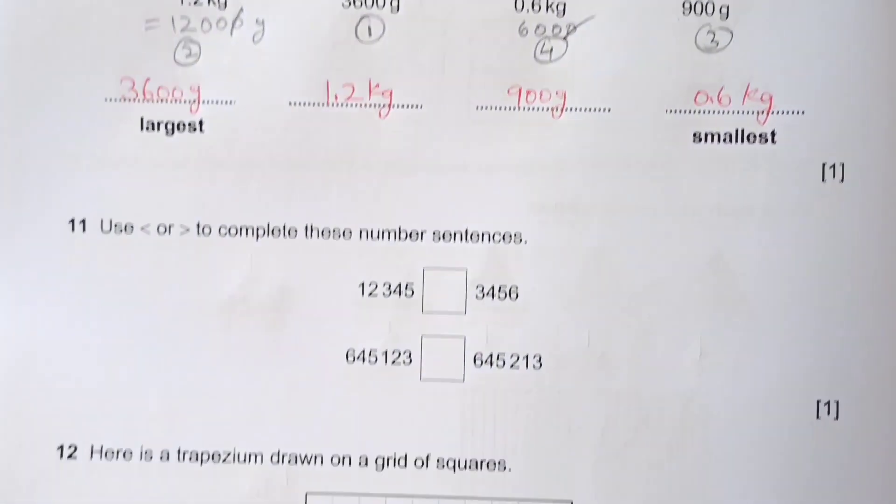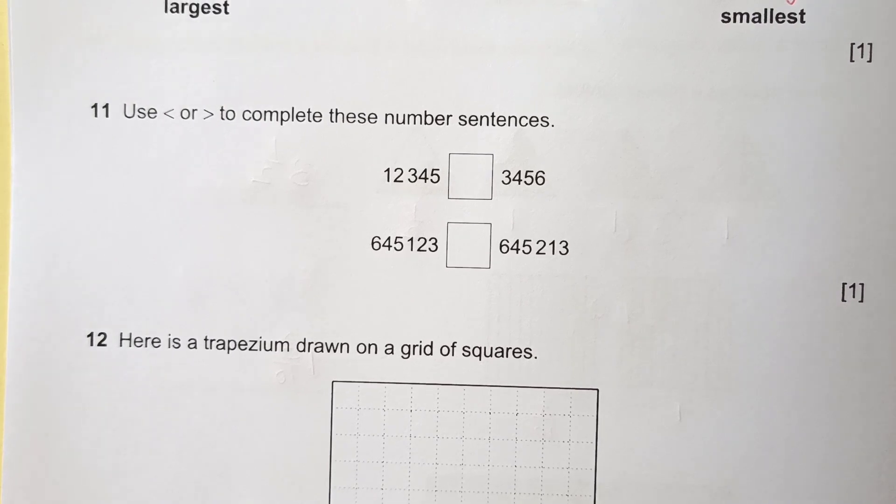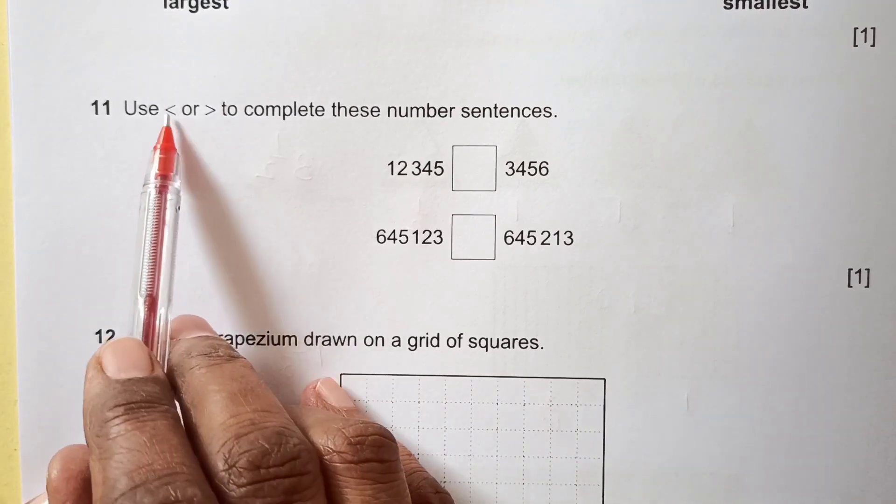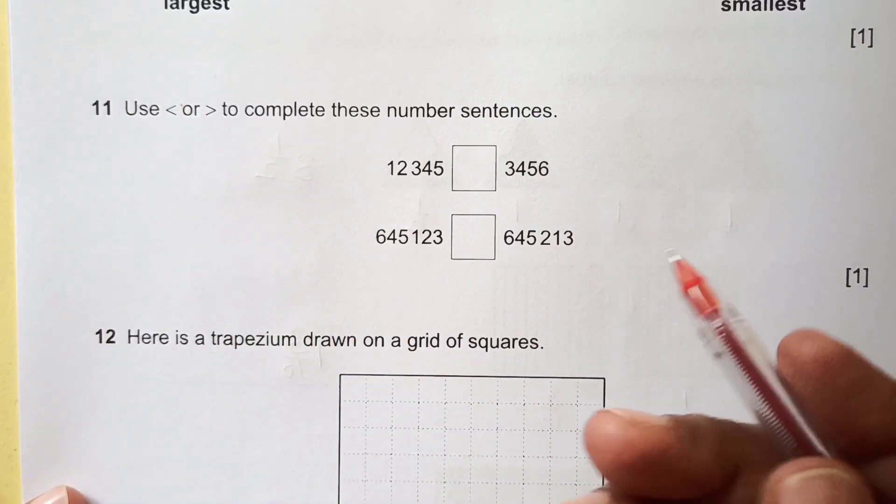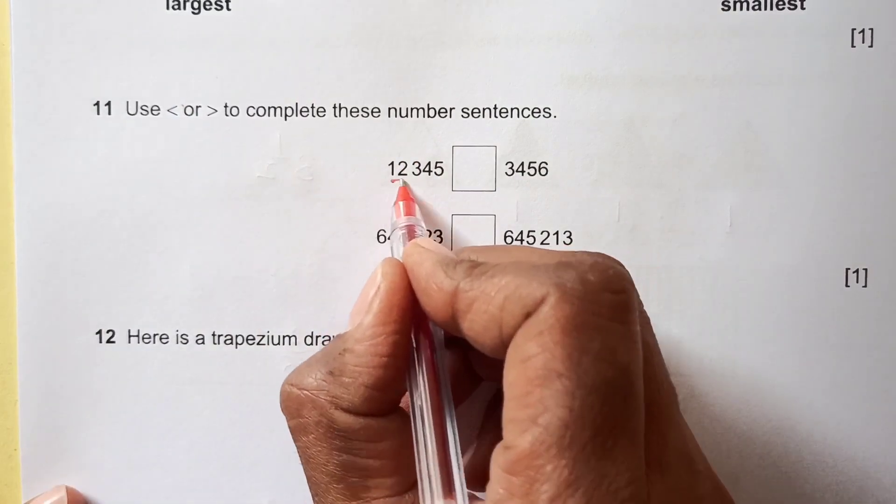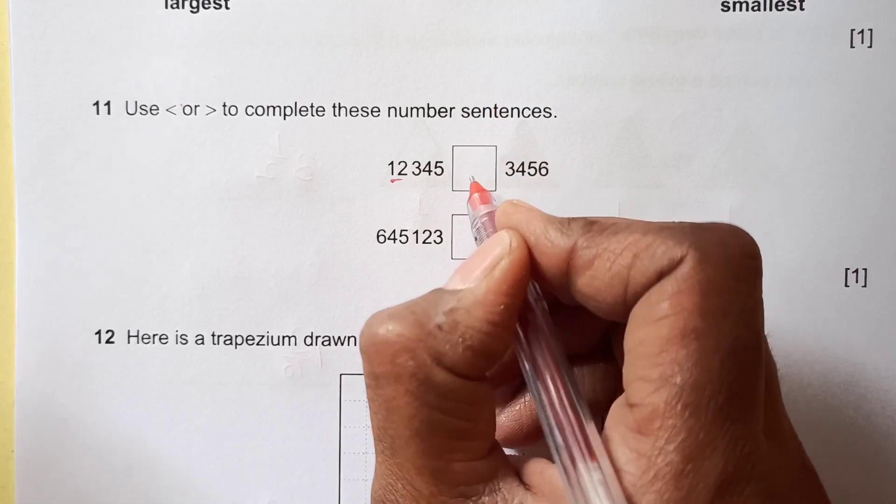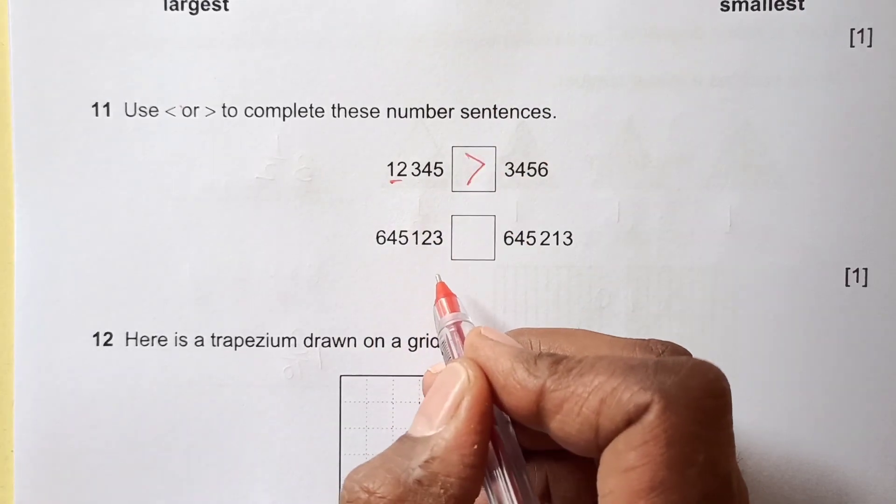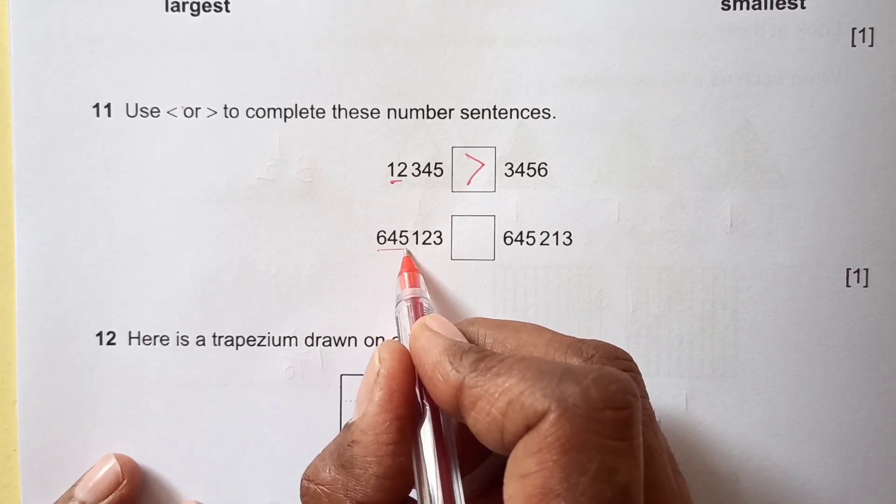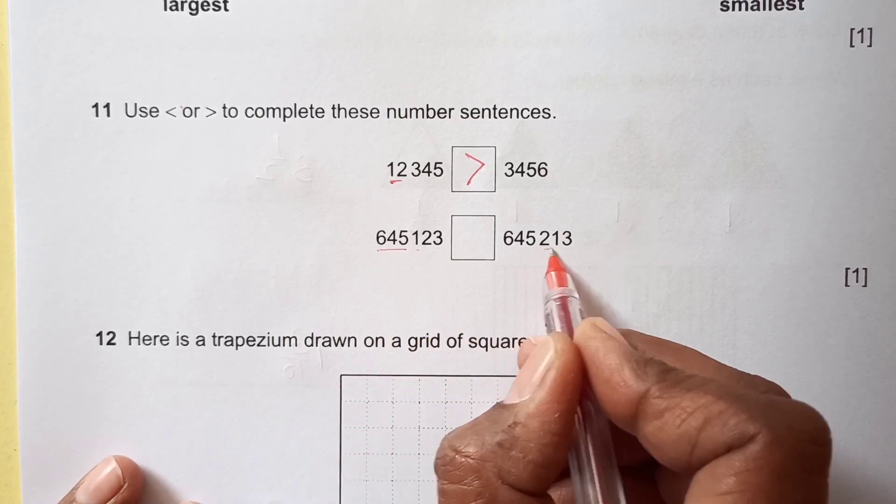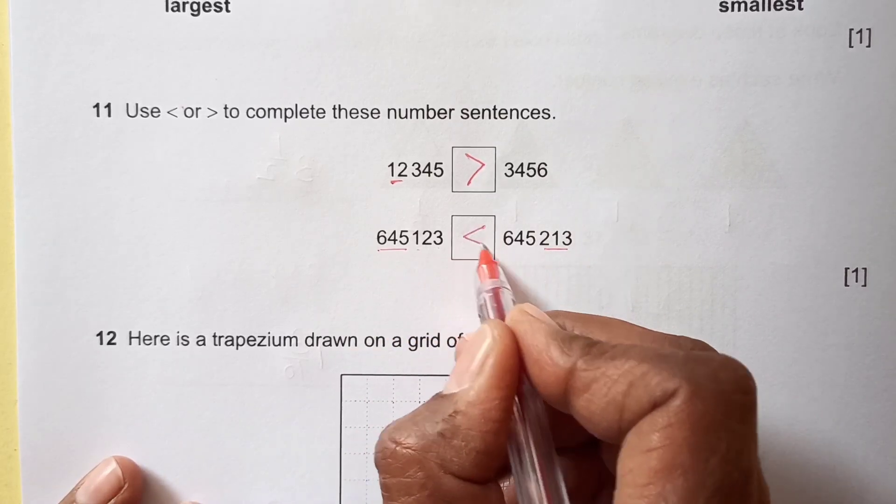Number 11, use less or greater sign to complete these. This sign should open up towards the bigger number. 12,345 - this one is greater - and the other one is 6,645. Here is 123, here is 223, so this one is greater. So this arrow face will be to this side.